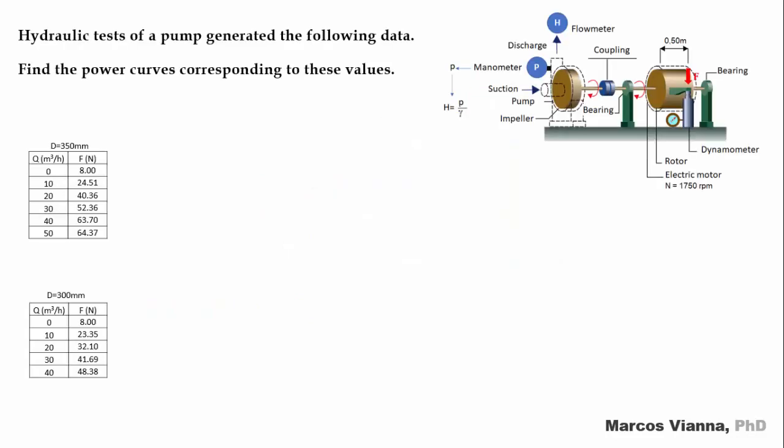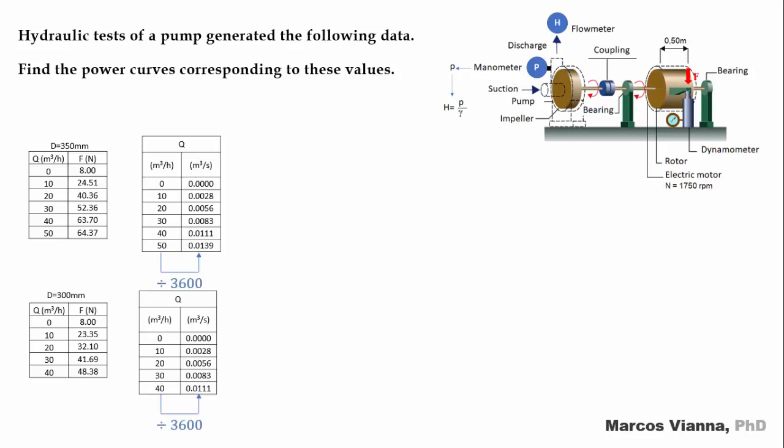Let's run an example. Hydraulic tests of a pump generate the following data. Find the power curves corresponding to these values. First, we convert the flow units from cubic meters per hour to cubic meters per second. We do this dividing each value by 3600, which is the number of seconds in an hour.